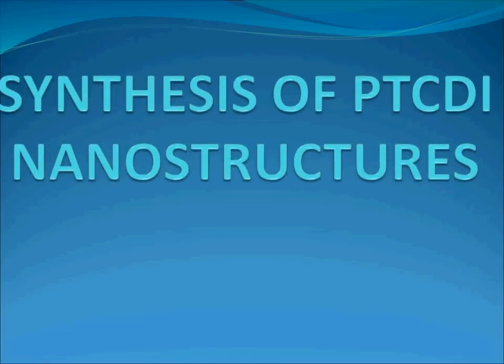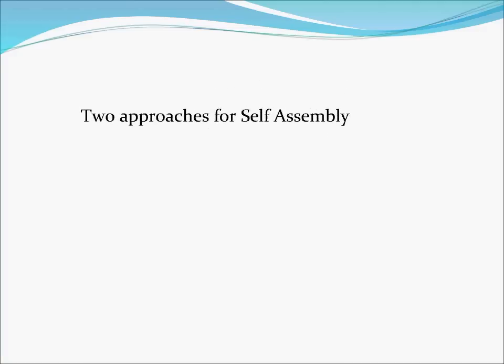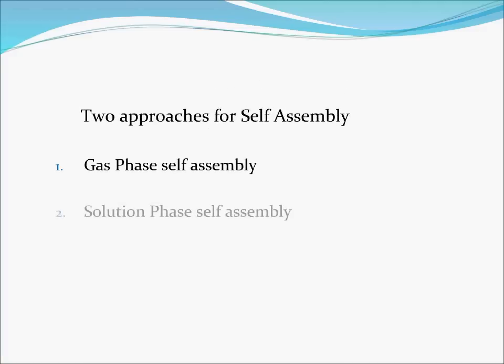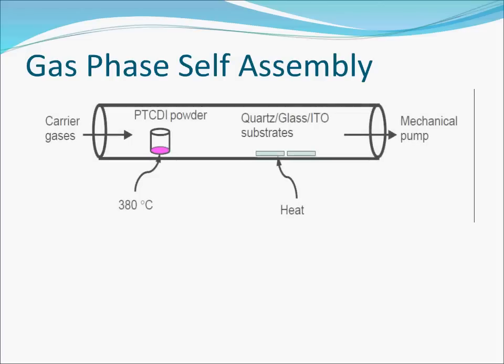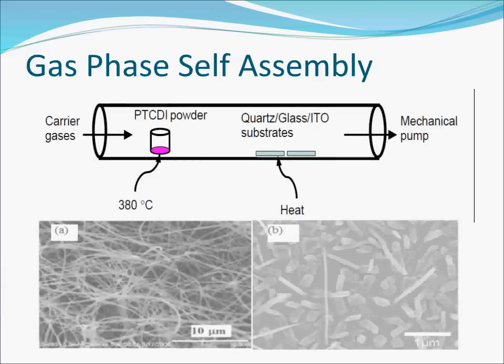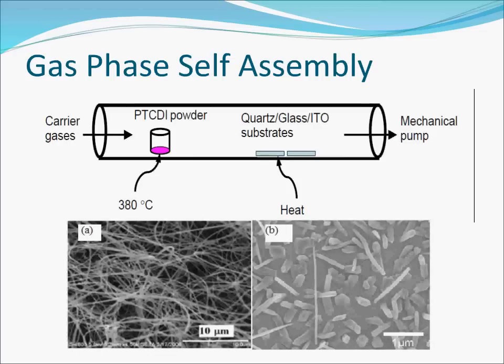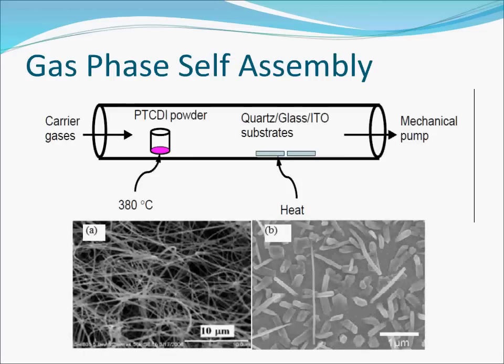Let us look into the synthesis of PTCDI nanostructures. Two approaches, each with their pros and cons, are used for self-assembly: gas phase and solution phase self-assembly. In the gas phase self-assembly process, PTCDI powder is heated in an inert atmosphere or vacuum. The molecules self-assemble on glass, ITO, or pot substrate to form nanowires like those shown here.